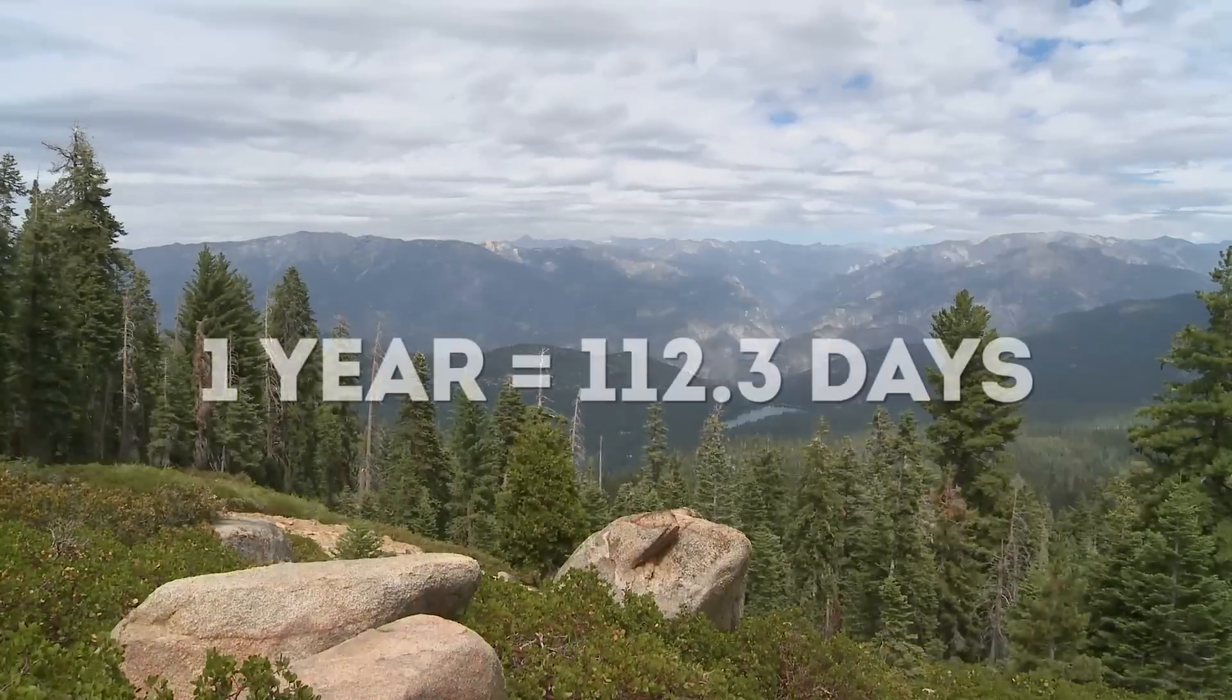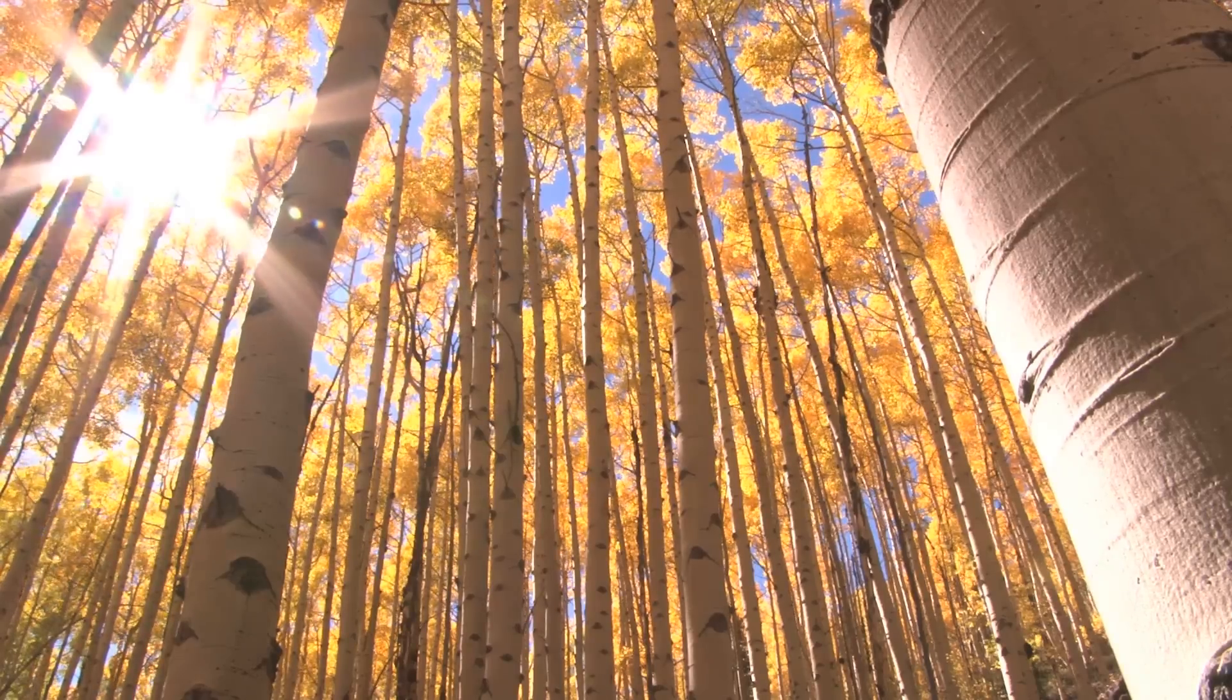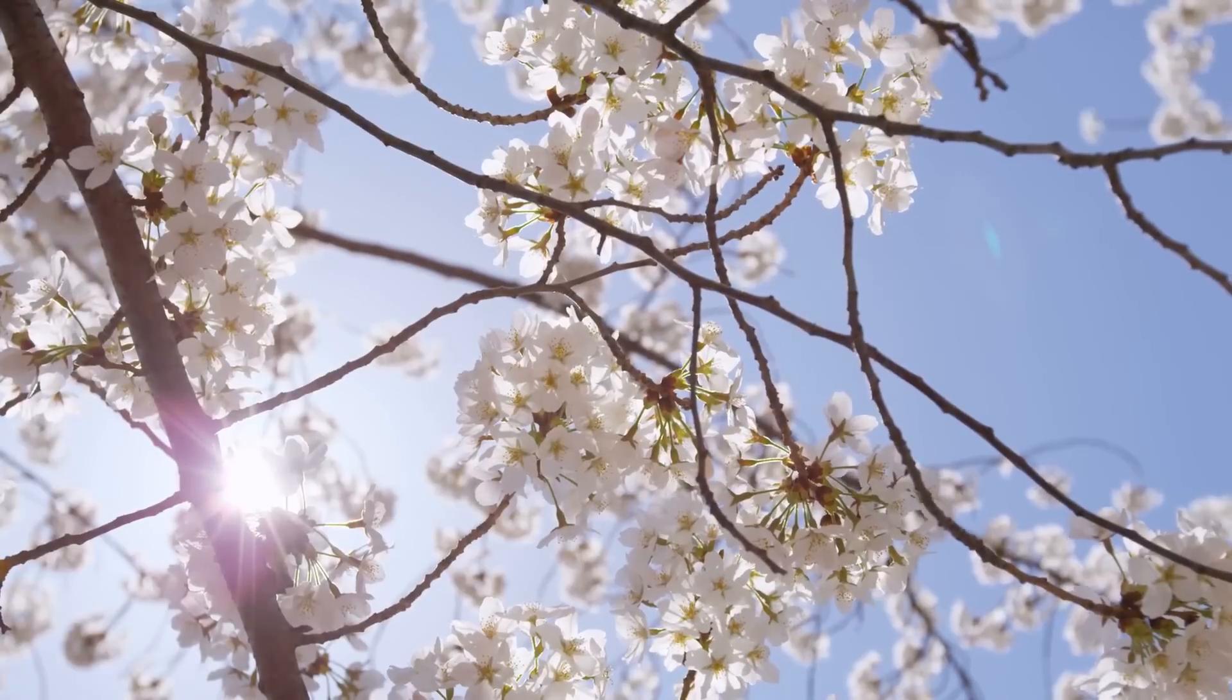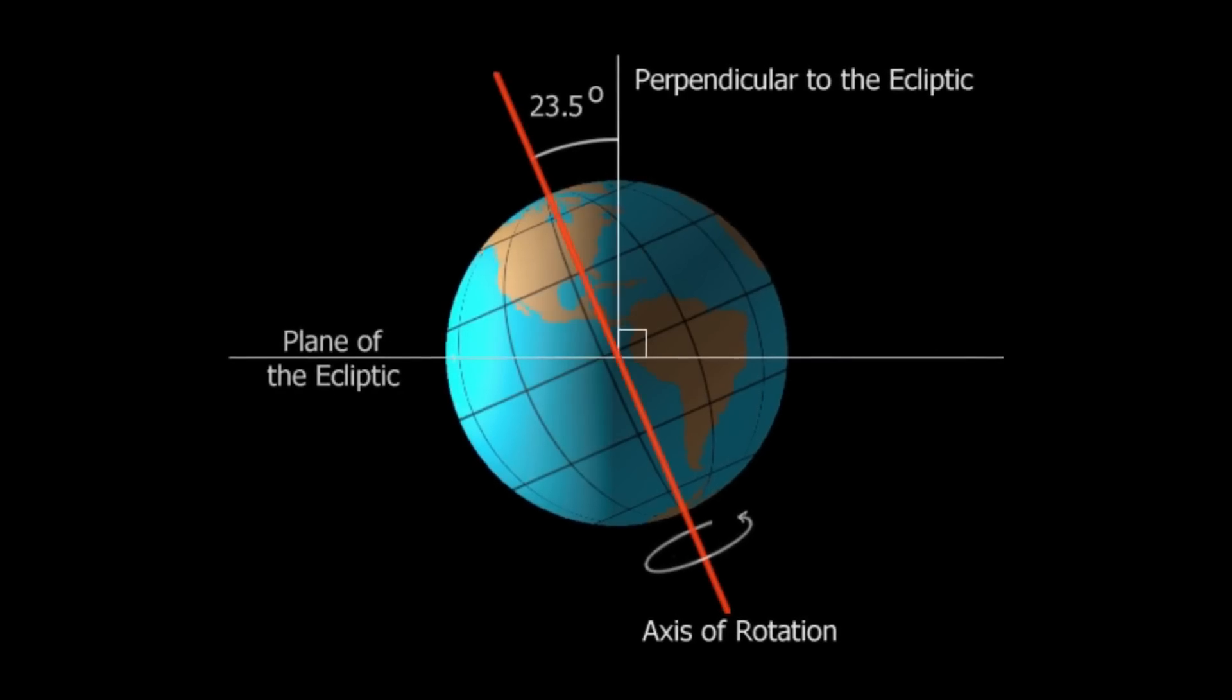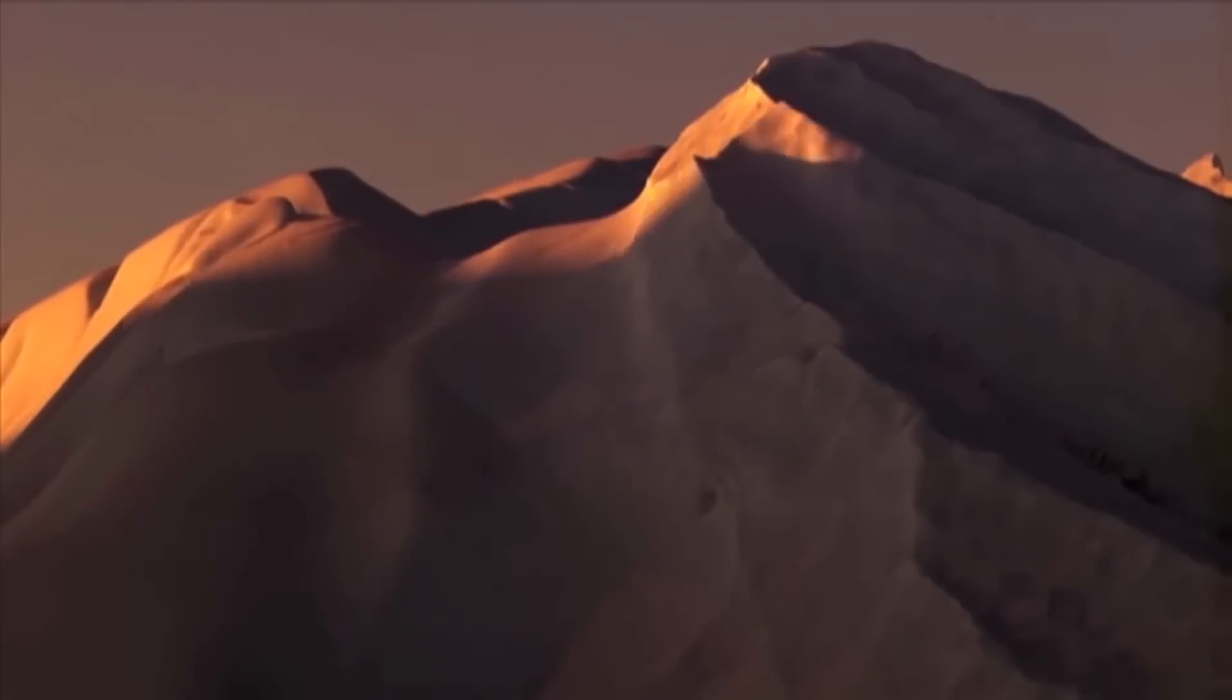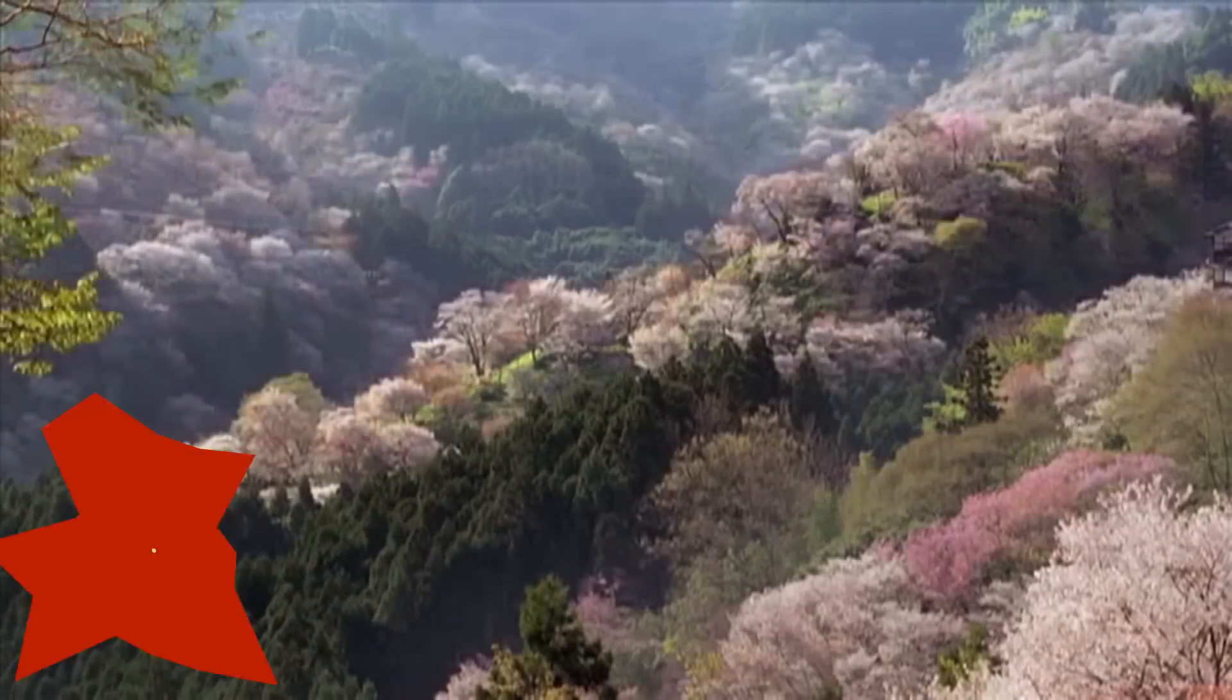For instance, a year would only be 112.3 days long, and we'd experience only 70% of the sunlight that we're used to receiving on Earth. Since the axial tilt is believed to be fairly small, we also shouldn't expect to enjoy the quarterly change in seasons that we're accustomed to.